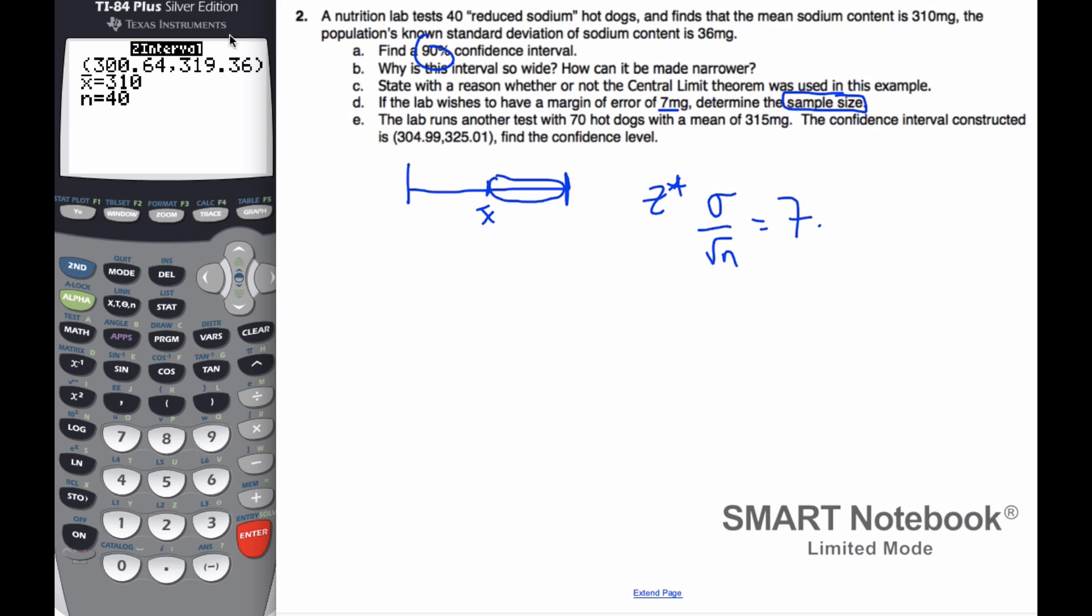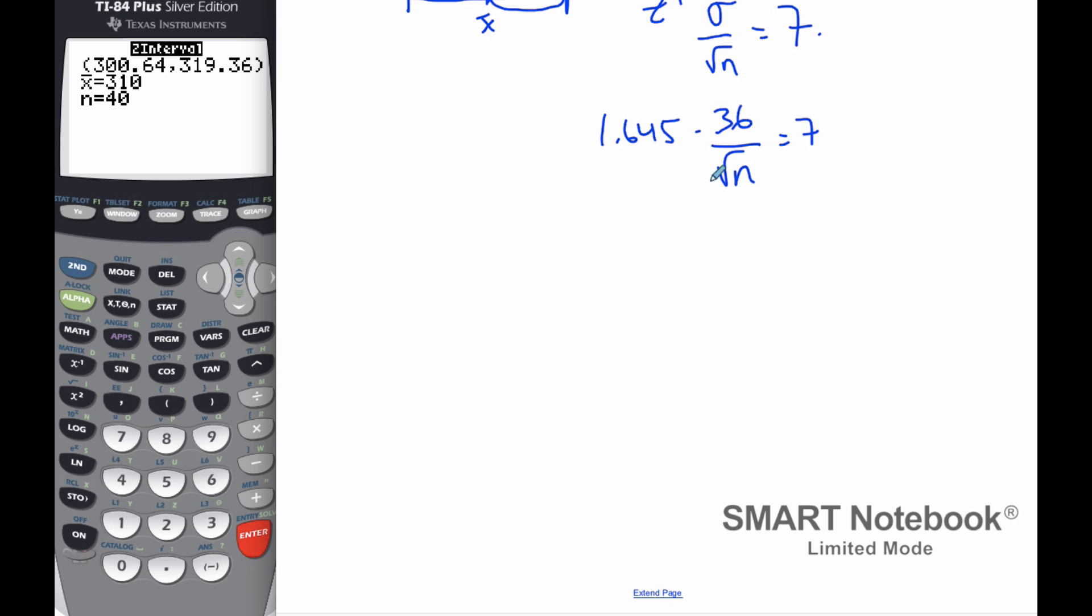Well, my Z star I remember is 1.645. I can't change my standard deviation, but I can change root n equals 7. Well, if I do some computations here, basically I'm going to flip my fraction over. So root n is going to be 1.645 times 36 over 7.